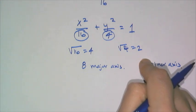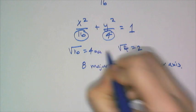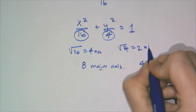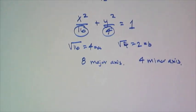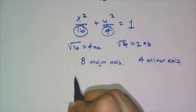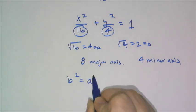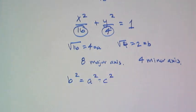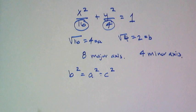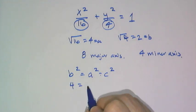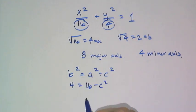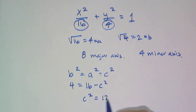This also helps me figure out the location of the foci. Remember, this value here is a and this value there is b. And if we remember, b squared equals a squared minus c squared. In this case, b squared is 4 and a squared is 16.